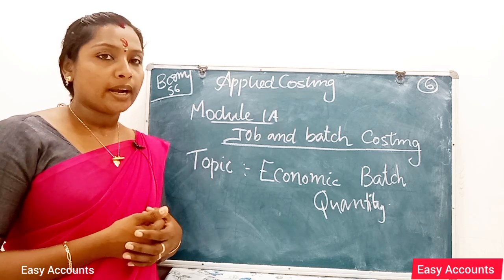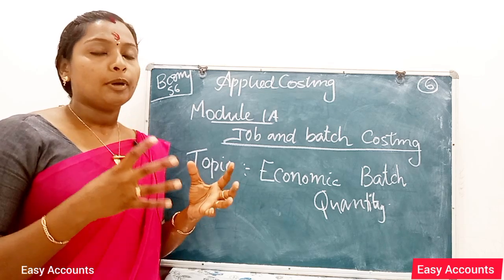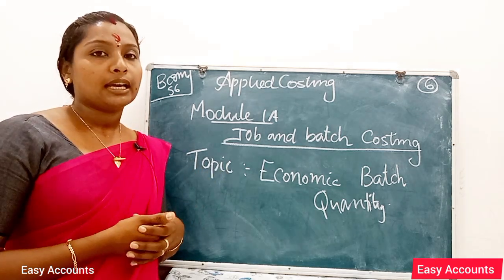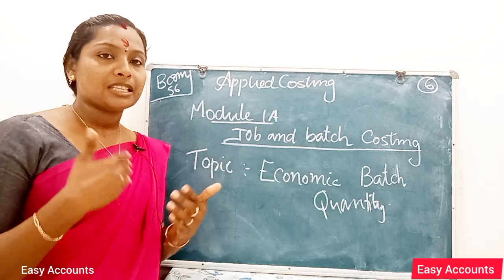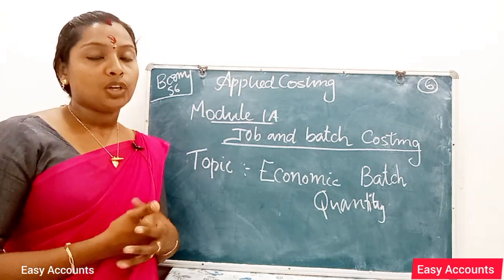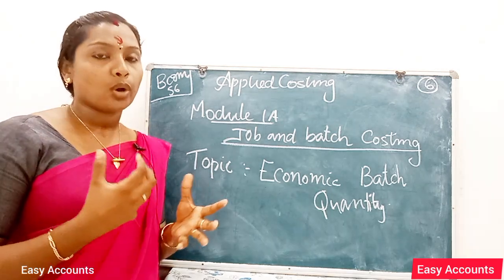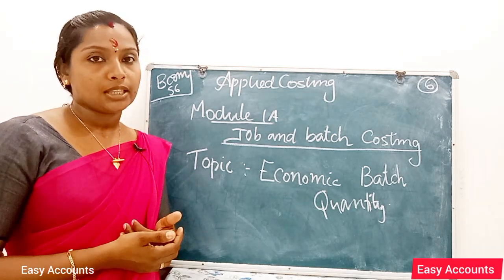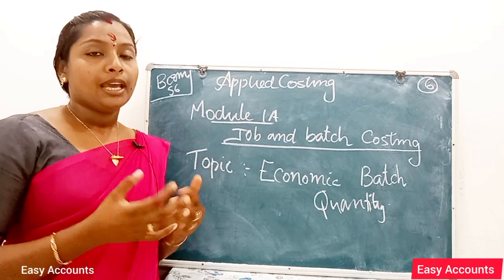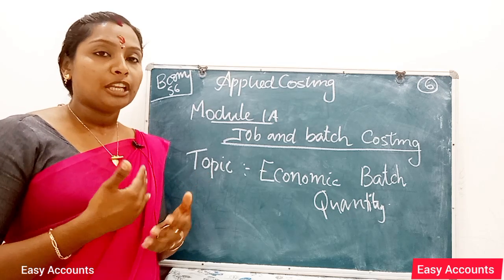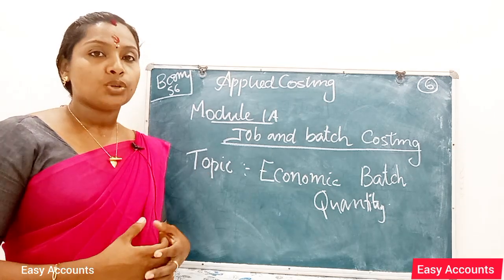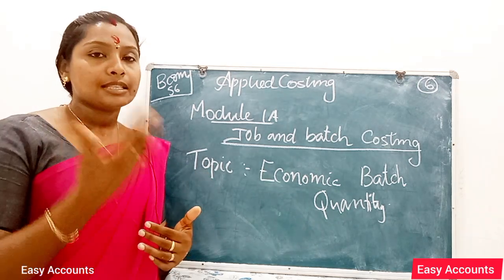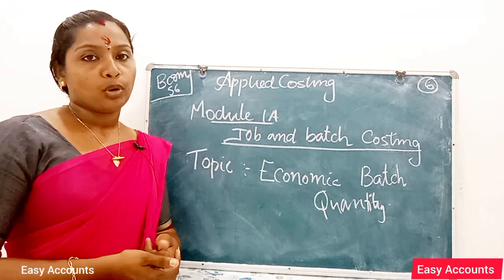If we produce the maximum amount of products, we will incur carrying cost, storage cost, and setting up cost. In this case, we will need to reduce the maximum amount of products to produce in order to minimize total costs.